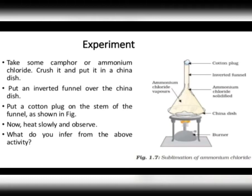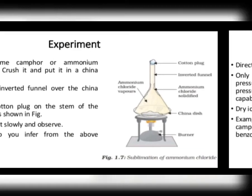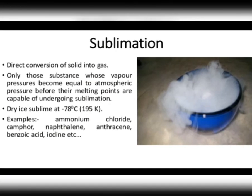Sublimation does not occur in all substances — it occurs only in a few substances, so it's a very rare process. The common substances which undergo sublimation are ammonium chloride, iodine, camphor, naphthalene, and anthracene. When these solids are heated, their particles move so quickly that they separate completely to form vapors or gas.